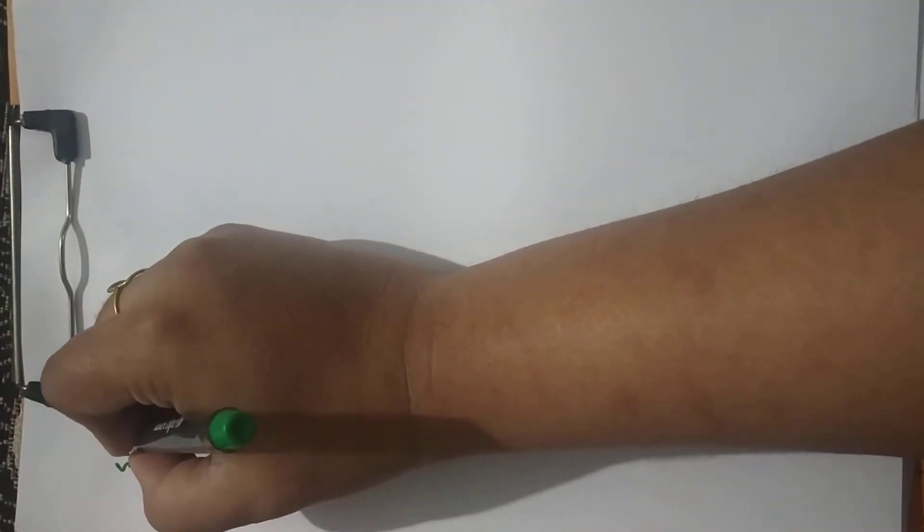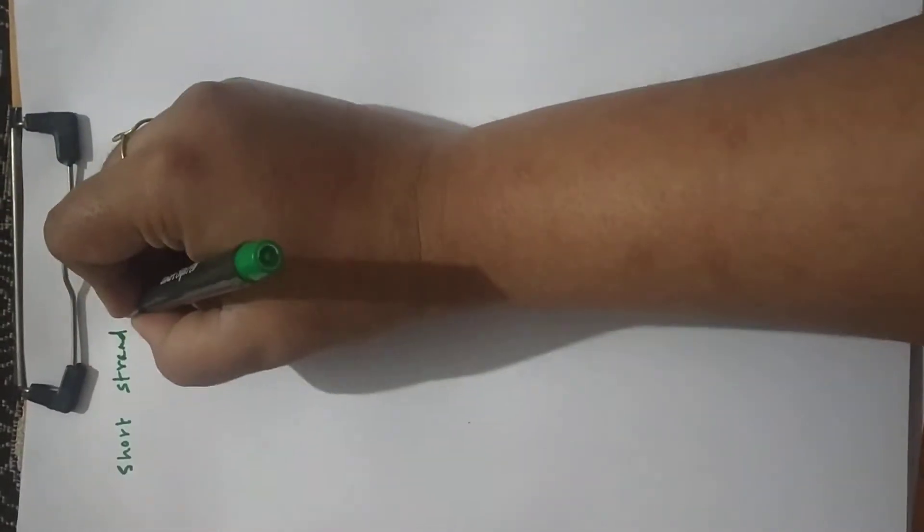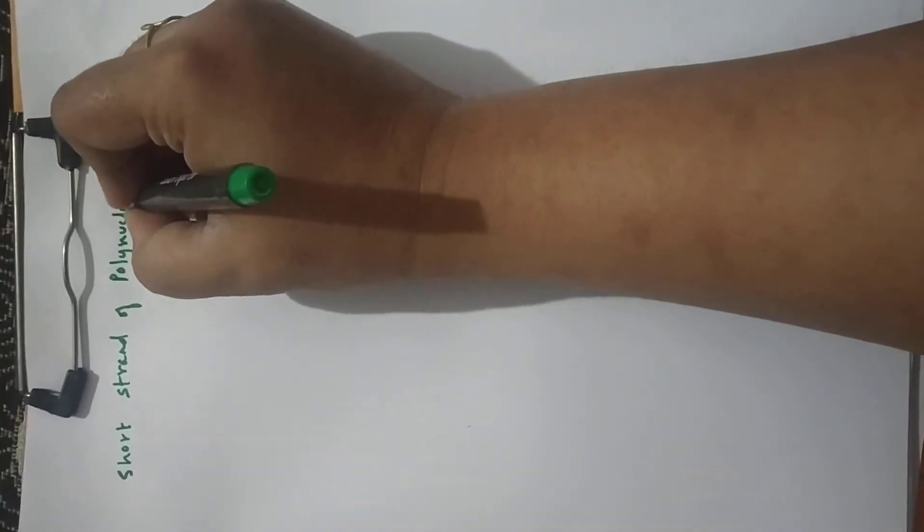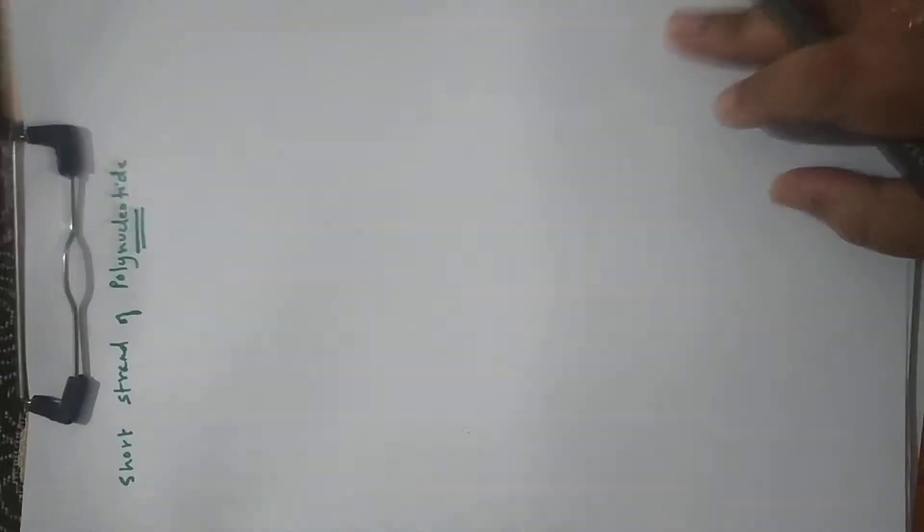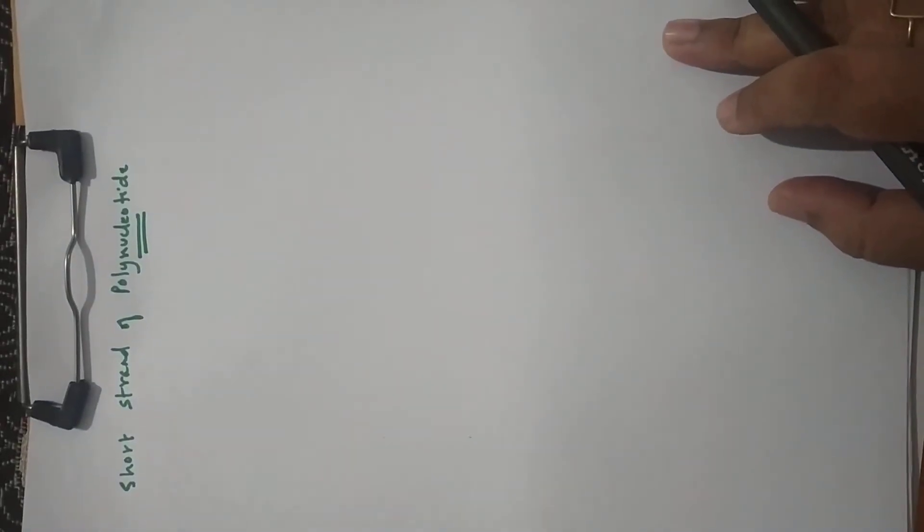Hi, so in this video I am going to show you how to draw a short strand of polynucleotide. Now we have to remember that the polynucleotide could be a DNA strand or an RNA. So to be able to draw that, the basic structure that we need to know is that of a nucleotide.